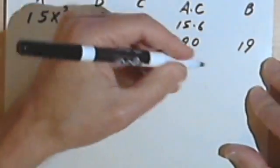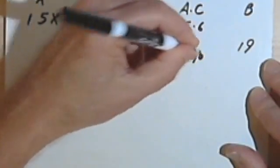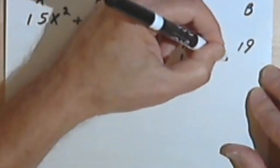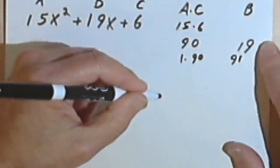So let's see what I can do. Starting with 1, I could think of 90 as 1 times 90, but 1 times 90 adds up to 91, and that's not going to help.